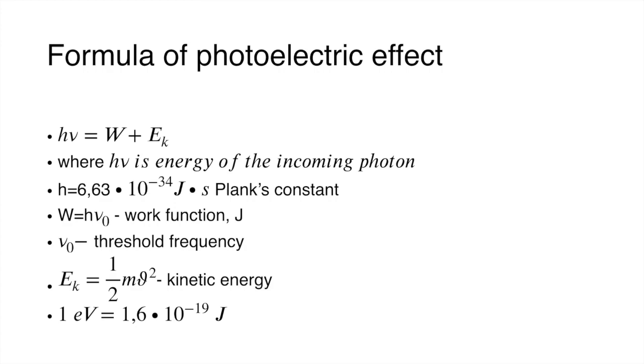Nu is frequency, and h nu is one quanta, is one portion of energy. This portion of energy divided by work function and kinetic energy. Work function you can find by formula as h nu zero, threshold frequency. Kinetic energy you can find by formula m v squared divided by two. And the unit of energy is of course joule, but you can use electron volt too. One electron volt equals 1.6 times 10 to the negative 19 joules, and you can find it under all of formulas. Please write it.